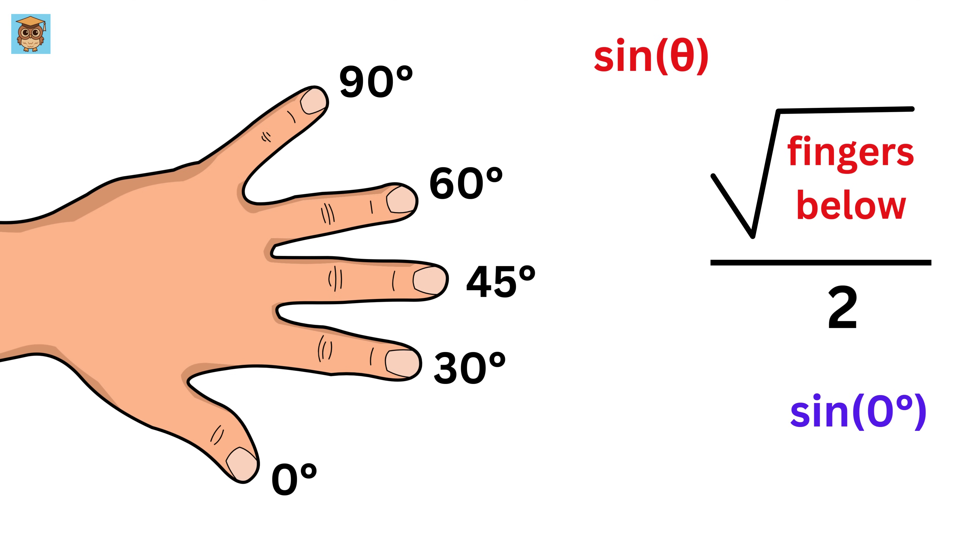For example, let us find the value of sine of 0 degrees. This is 0 degrees, so the number of fingers below it is 0, because we do not have any fingers below it. Thus, sine of 0 will be square root of 0, divided by 2, which is 0.